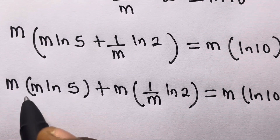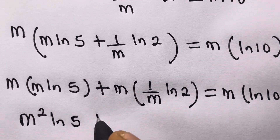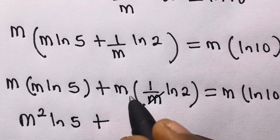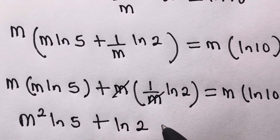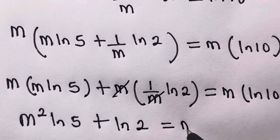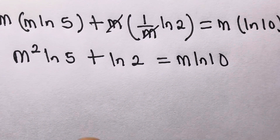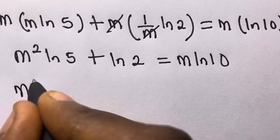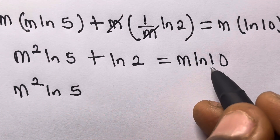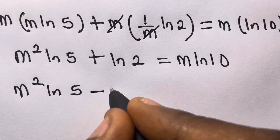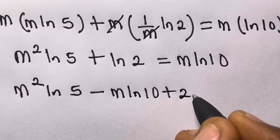So m times m gives us m², so we have m²·ln5 plus ln2. We transfer the m·ln10 to the left side, so we have m²·ln5 minus m·ln10 plus ln2 equals 0.